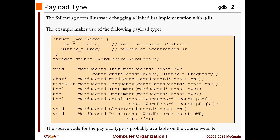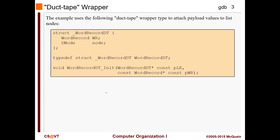Here you will see some typecasting in the printing. Our payload is going to look like this: we're going to have a character pointer `word` and a frequency count. We are typecasting it. These are the helper functions we are going to have for this implementation - init, word frequency, increment, decrement, equals, clear, print. It's like Java but they are not part of a class; instead they are just direct implementation, structure programming.